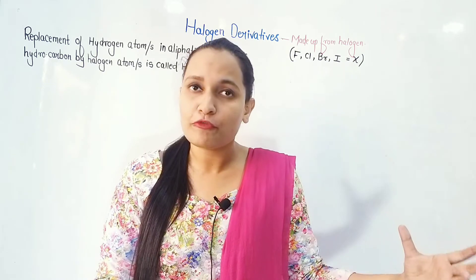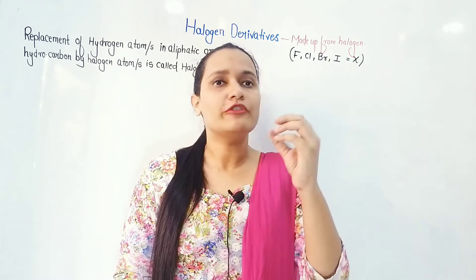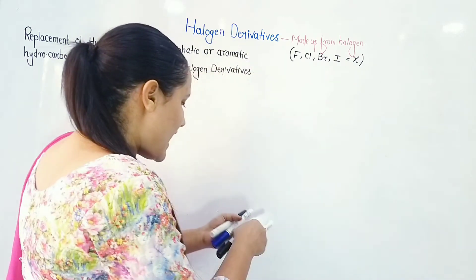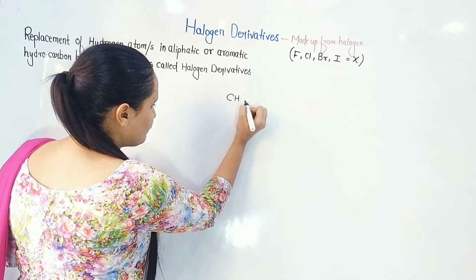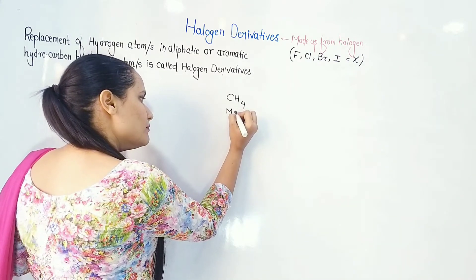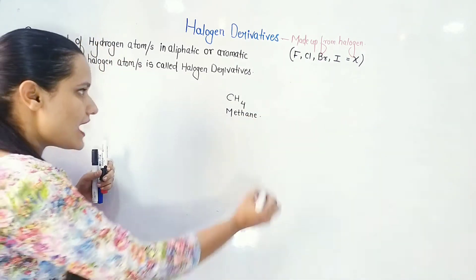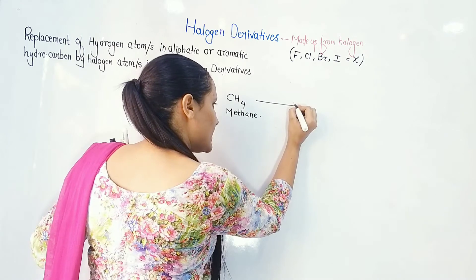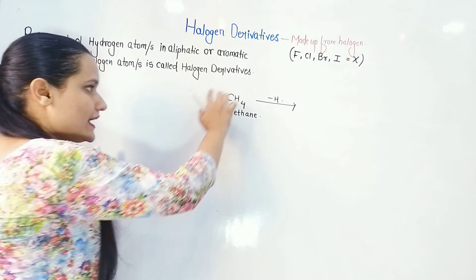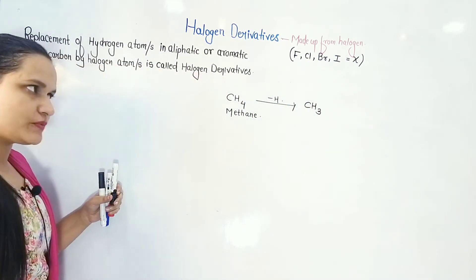Before that, we will talk about some basic concepts from Class 11. You all know that CH4 is known as methane. Now, if we remove one hydrogen from CH4, we will get CH3.